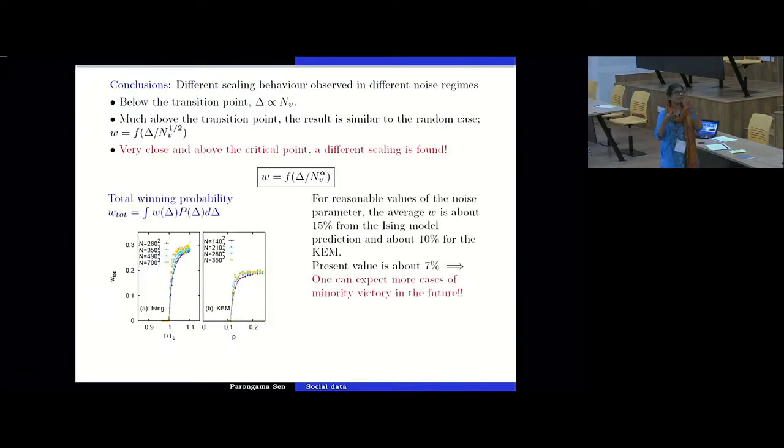Another important issue is if we now try to predict that in future, do we expect this kind of thing to happen? So what we need to do now is find out the total w for whatever value of delta we have. So we integrate out this quantity. And then we find for Ising and the kinetic exchange model, this kind of a behavior. So this jump is near the critical point, you can see. And here you have a kind of a step function behavior approaching as we go to larger and larger values of n. And then if you calculate kind of the average around this critical point, then you can predict that what will be the value of the total expected instances of this kind of outcome. So this average turns out to be 15 percent from the Ising model and about 10 percent from the kinetic exchange model. But the present value is 7 percent. This is four instances out of all the US elections. So our model predicts that there will be more such cases in future.